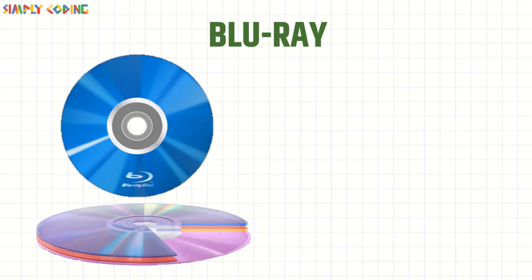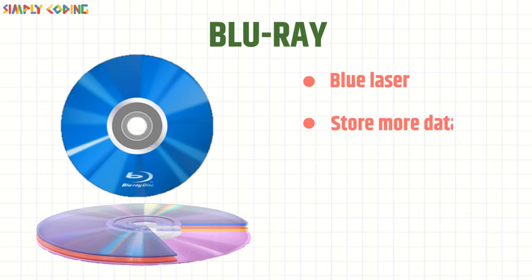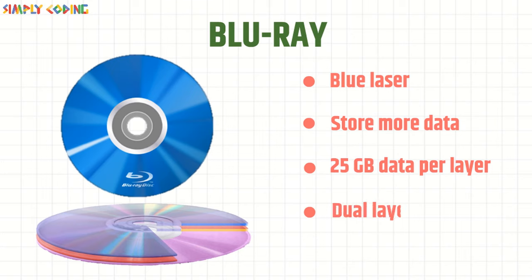Next is Blu-ray. The name comes from the blue laser which reads from and writes to the disk, rather than the red laser used by DVD. This allows it to store more data, and it can hold 25 GB of data per layer. There are dual-layer and triple-layer disks which hold even more data.